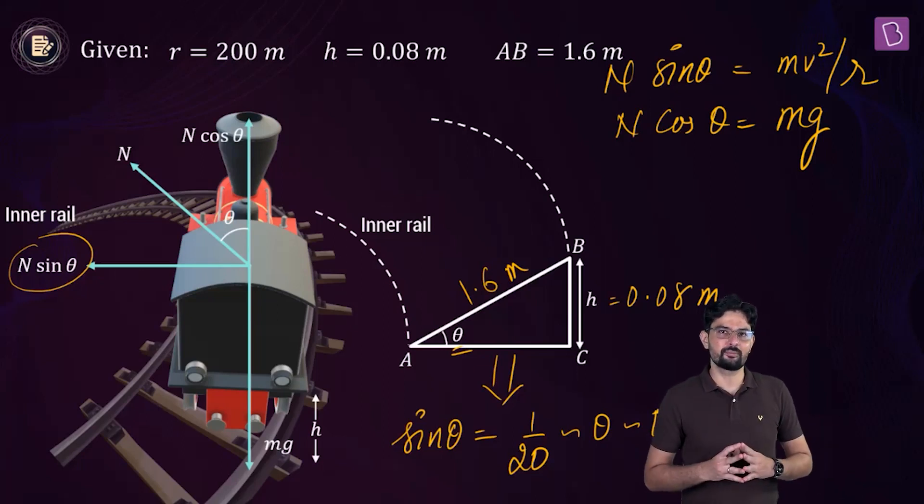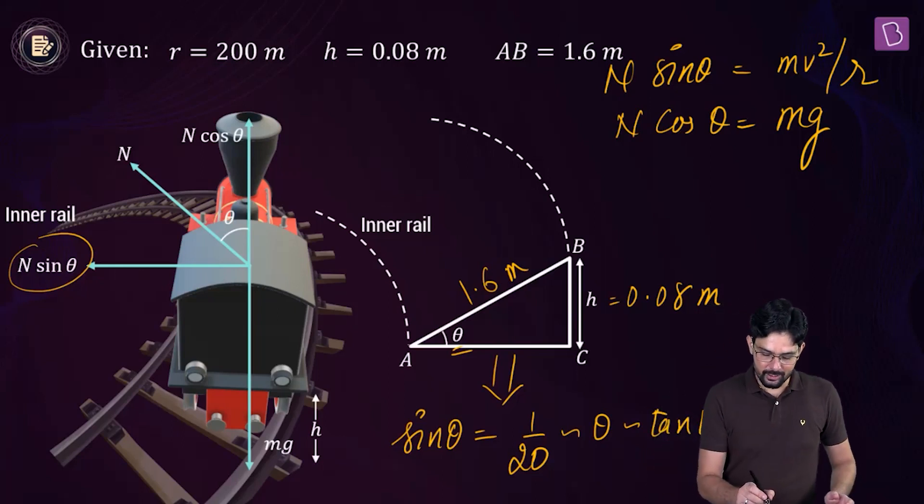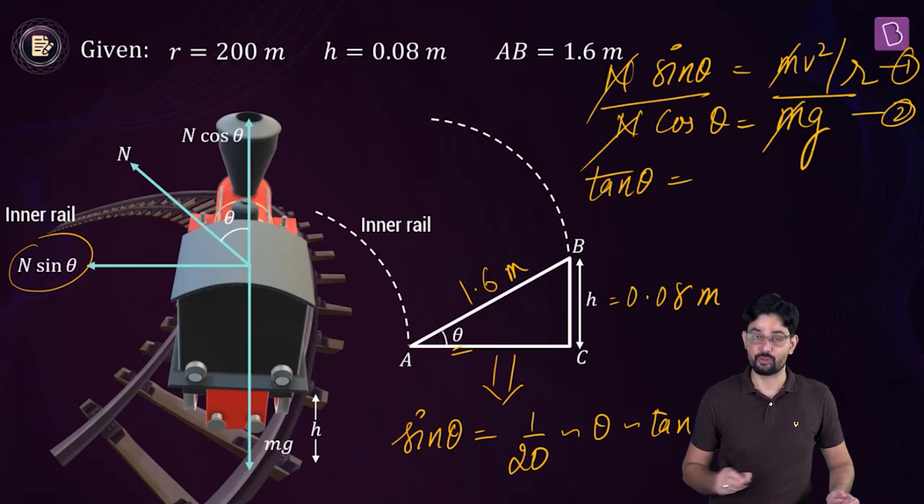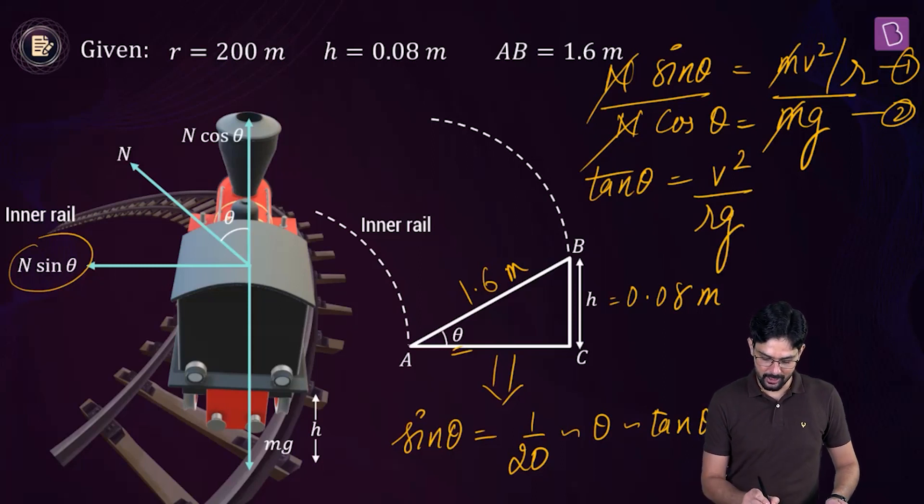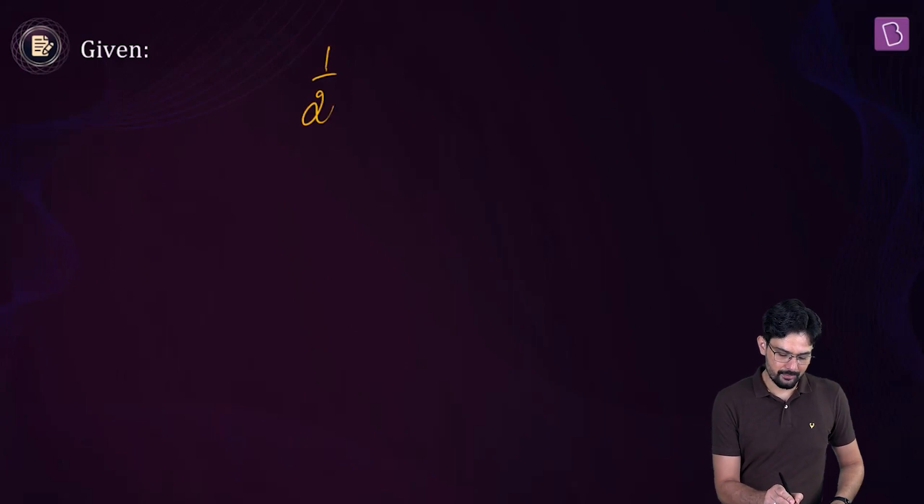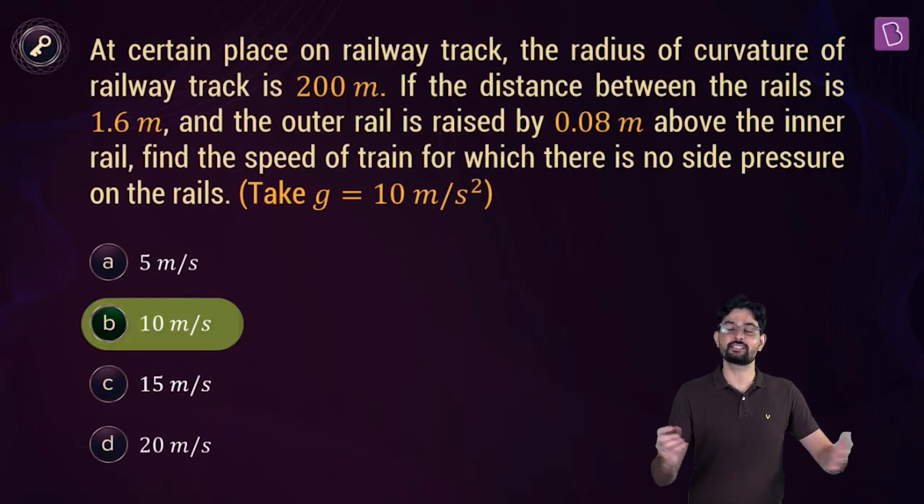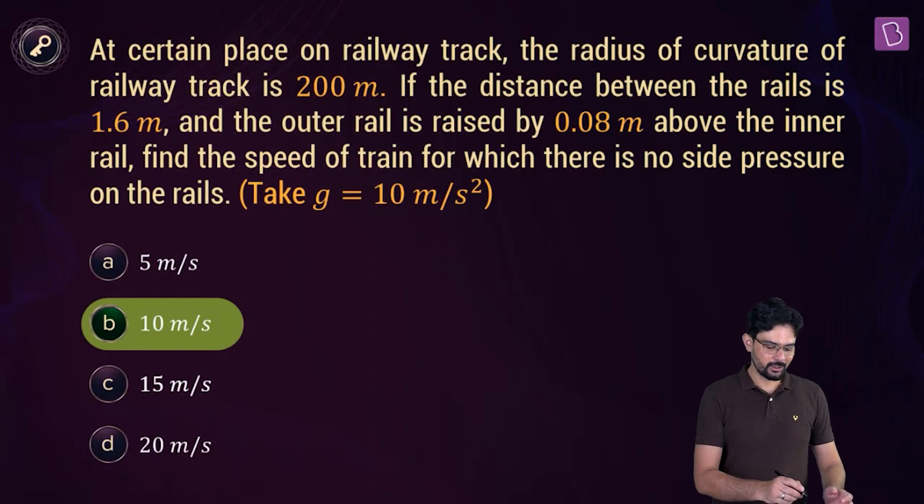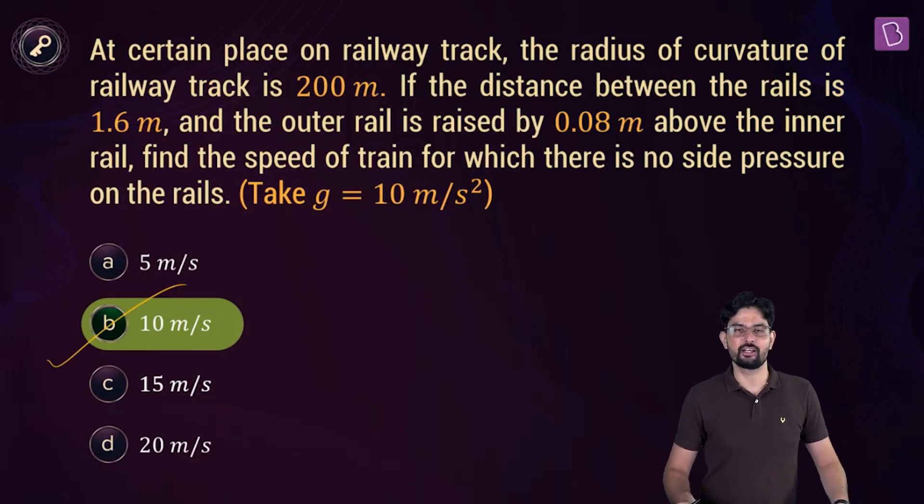And why am I finding the value of tan theta? Because I am planning to perform the operation 1 by 2, which is this. And the N is going to get cancelled out and on the left hand side, I will have tan theta. And that is why I want to find what is tan theta. So tan theta here is going to be equal to v square by r into g and tan theta is 1 by 20. So let's move on to an empty slide to solve this. So 1 by 20 is v square divided by r is 200 and g is 10. And you get the value of v as 10 meter per second. And this is your right answer. So in this case, you can take option b as the right option for this simple but conceptual problem.